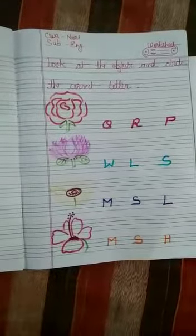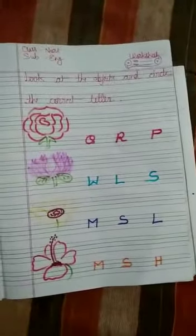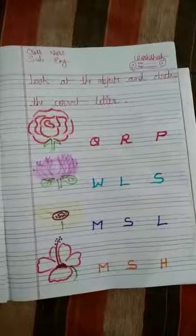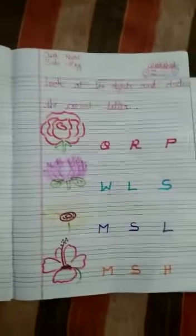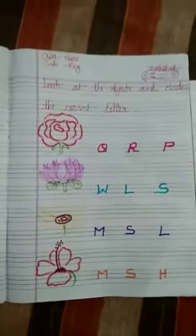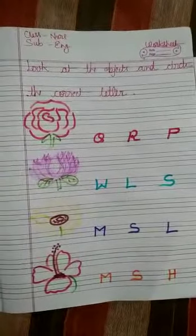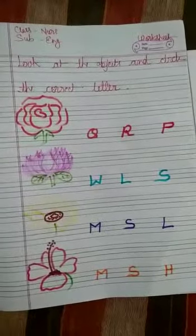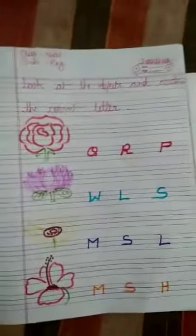Hello kids, how are you? I hope all of you are well and safe. Today's subject is English, and we are going to learn: look at the objects and circle the correct letter. Objects ko pahachanna hai aur related letter ko circle karna hai — correct letter ko circle karna hai.